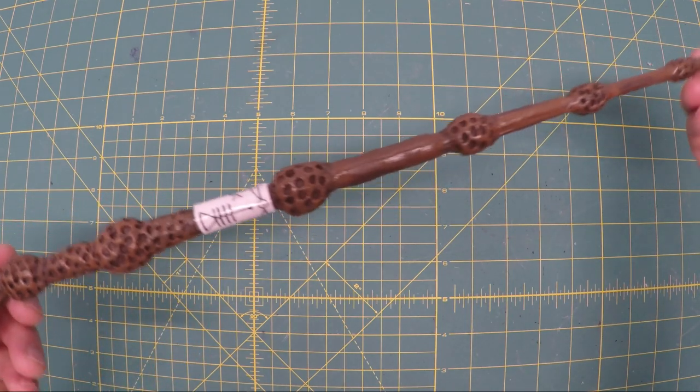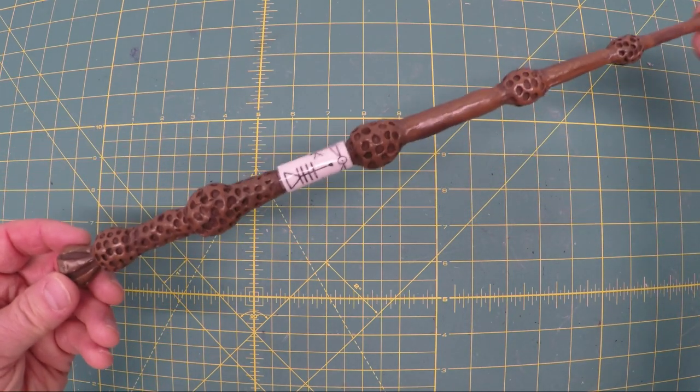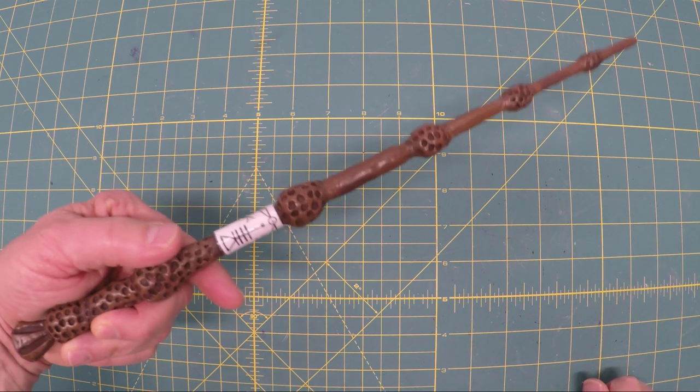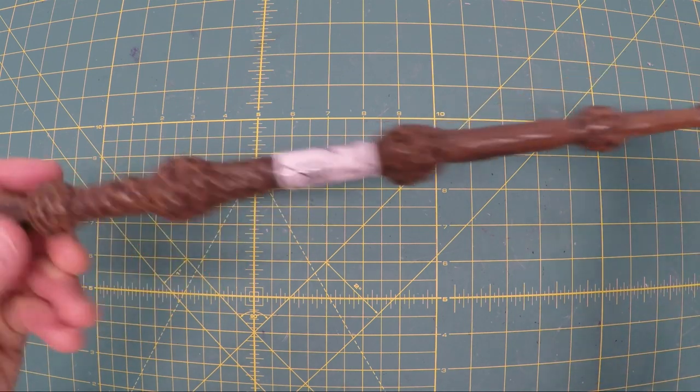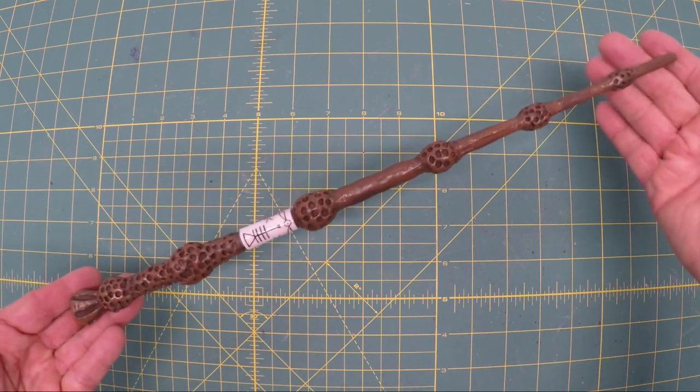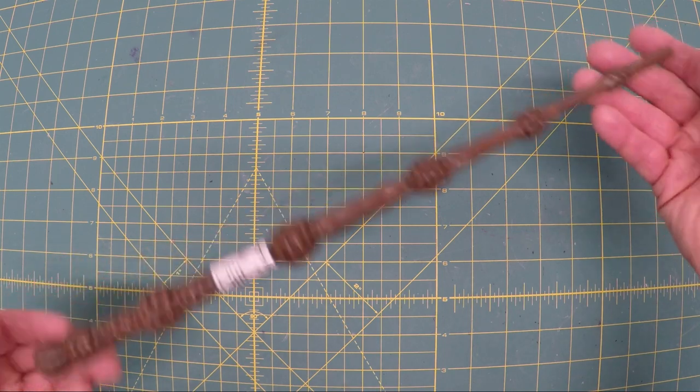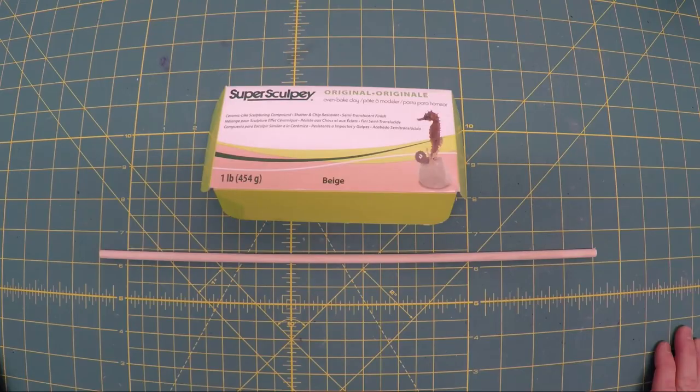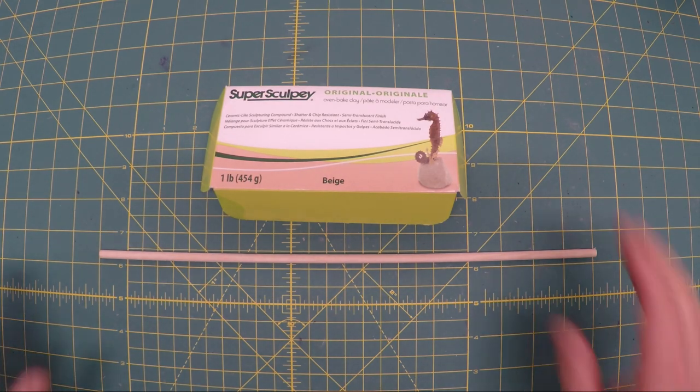Today we're making the Elder Wand popularized by the Harry Potter series and soon the movie Crimes of Grindelwald. This is a wand that you can make all for about five dollars or less. Interested? Here we go. My objective of this build is to make an Elder Wand that anyone can build.